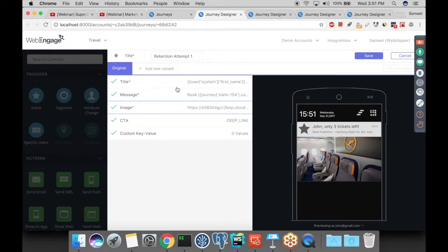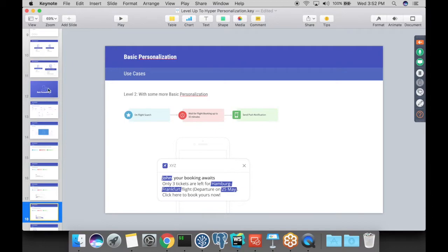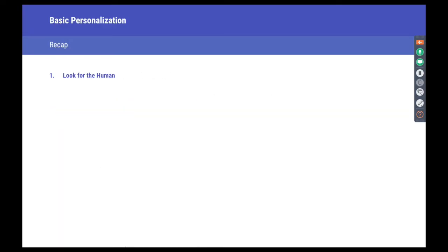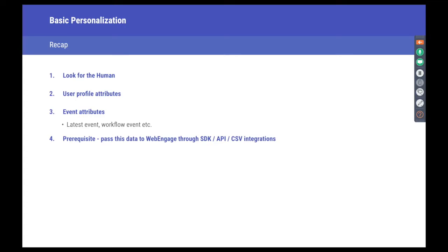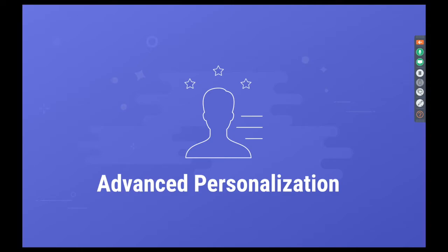This ability is channel agnostic — I'm showing you a push notification, but the same level of personalization is available across all channels. To recap where we are so far: we've made friends with the human icon; we have user profile attributes and behavioral data available for personalization; and the prerequisite is passing the data during integration using our SDKs, APIs, or batch uploads. All of this was personalization based on data captured inside the WebEngage ecosystem.